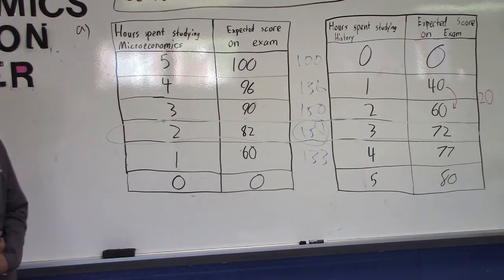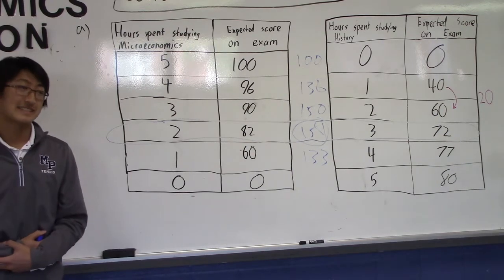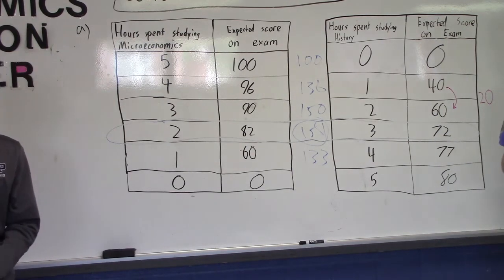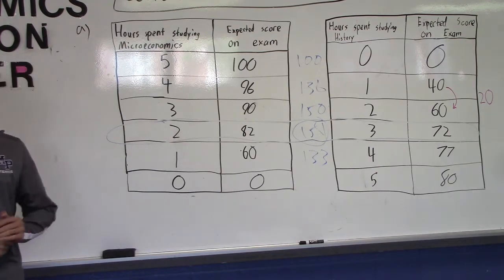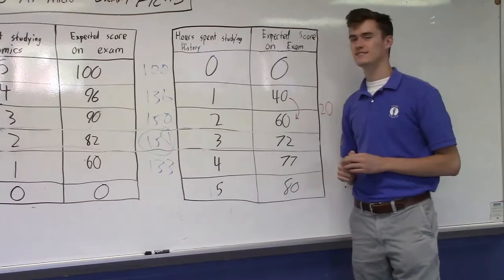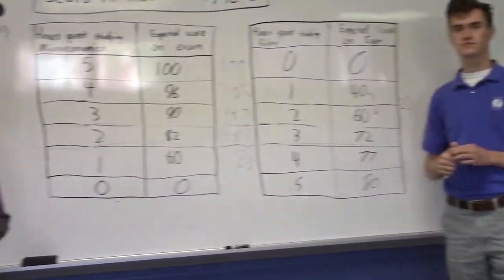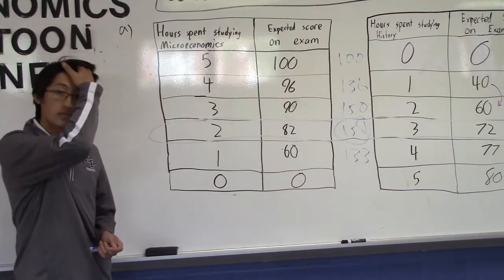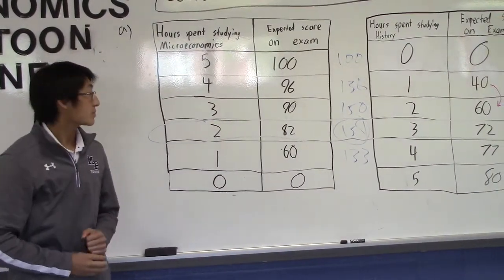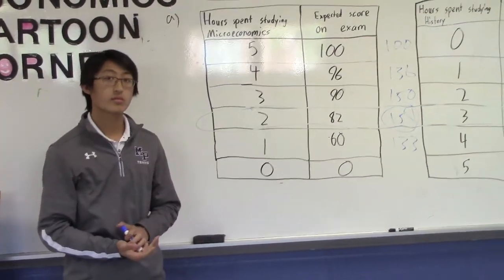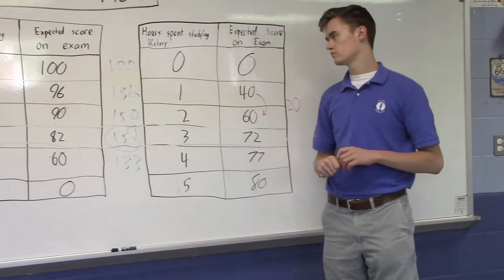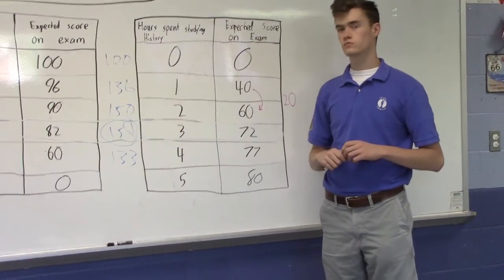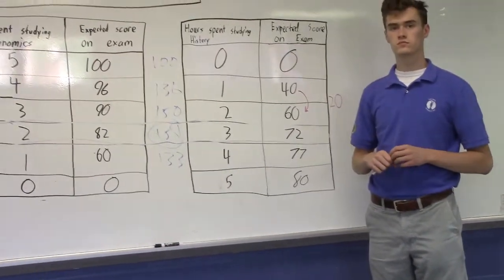Noralia learns that her tennis practice has been canceled. Get this, she loves that. Tennis, love. Freeing up an additional hour for studying. Given your answer to Part D, will Noralia allocate the additional hour to studying microeconomics or to studying history to maximize the sum of her test scores? And as you already did, explain using marginal analysis.